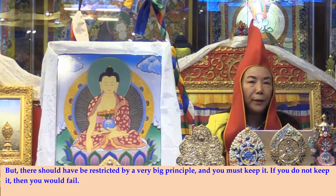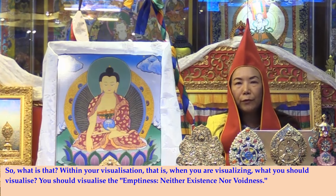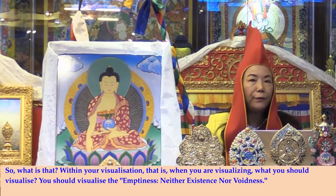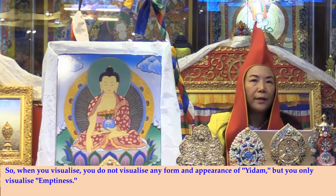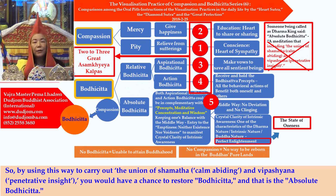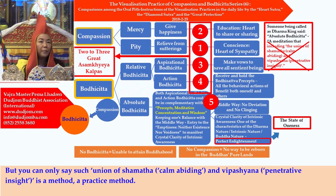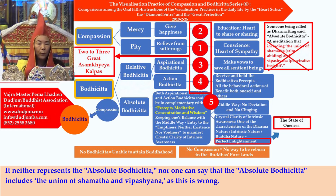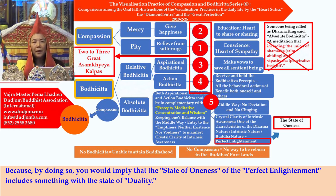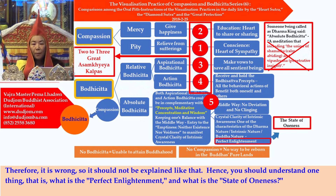By using this way to carry out the union of shamatha and vipasshyana, you would have a chance to restore bodhicitta — the absolute bodhicitta. But the union of shamatha and vipasshyana is a method, a practice method. It neither represents the absolute bodhicitta, nor can one say that the absolute bodhicitta includes the union of shamatha and vipasshyana — this is wrong. By doing so, you would imply that the state of oneness of perfect enlightenment includes something with the state of duality. Therefore it is wrong and should not be explained like that.